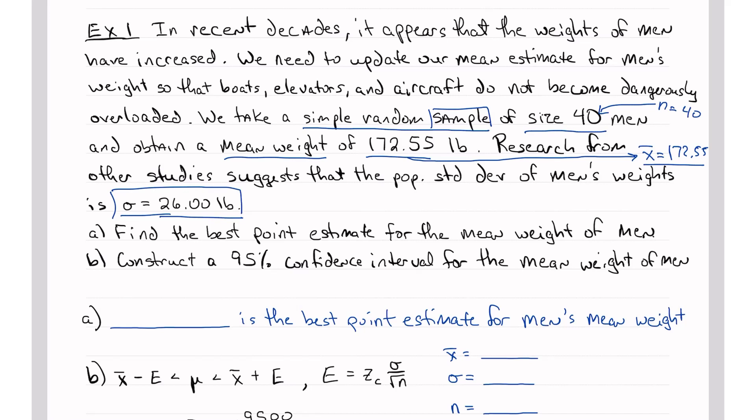First thing we want to do is find the best point estimate for the mean weight of men. This is a very easy question to get right on the test. So the best point estimate for the mean weight, last time we talked about that, that's x bar. x bar is equal to 172.55 pounds. I am looking for both the symbol and the quantity for this question. The units, well, units are nice, but I'm really more interested in the number. The units will change from problem to problem. I just want to make sure you know that the best point estimate is x bar and what its value is.